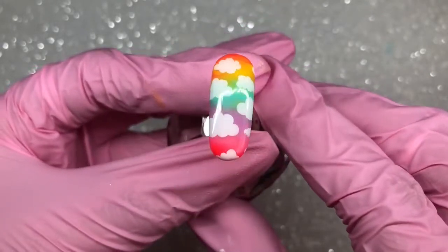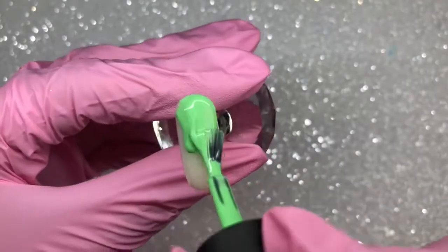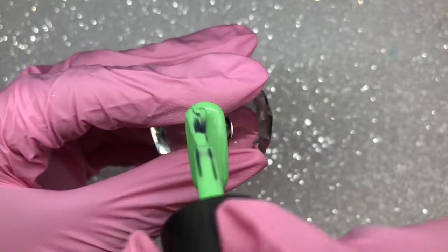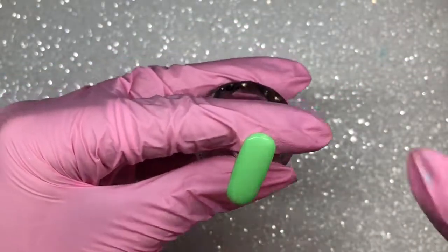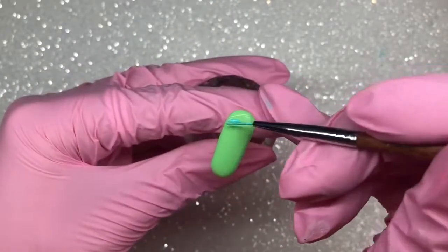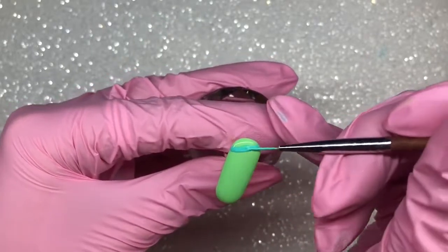Next design, I'm going in with a layer of that pastel green color. You can see how pigmented these Madame Glam gel colors are. They are honestly amazing. I cured that in my lamp and wiped off the inhibition layer. Now I'm going in with a striper brush. This is just a cheap one I bought from AliExpress.